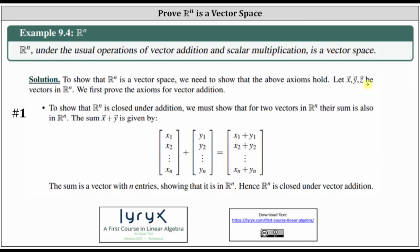We'll begin by proving the axioms for vector addition. Number one: to show that Rn is closed under addition, we must show that for two vectors in Rn, their sum is also in Rn. Considering the sum of vector x and vector y, we add the corresponding elements, and notice the sum is a vector with n entries, showing that it is in Rn. Hence Rn is closed under vector addition.